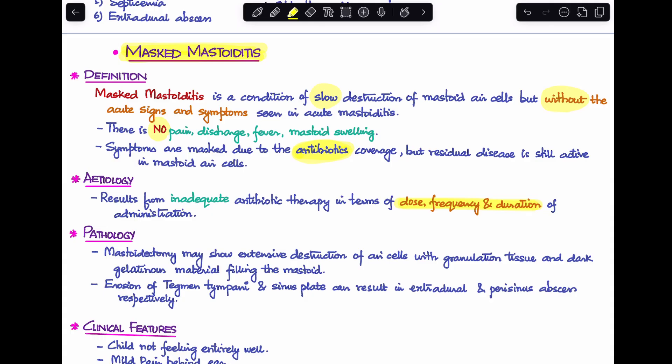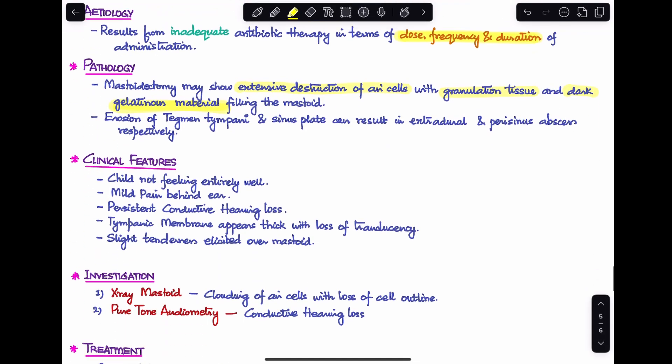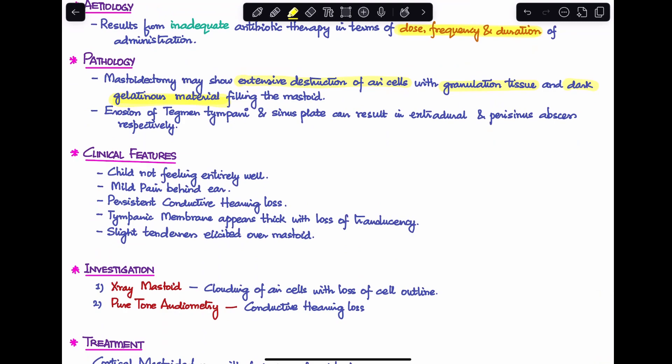Pathology: when you perform mastoidectomy, you'll see extensive destruction of mastoid air cells with formation of granulation tissue and dark gelatinous material filling the mastoid. You can even end up seeing erosion of the tegmen tympani and the sinus plate leading to extradural and perisinus abscess.